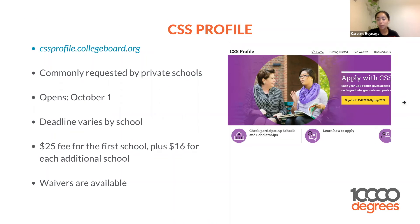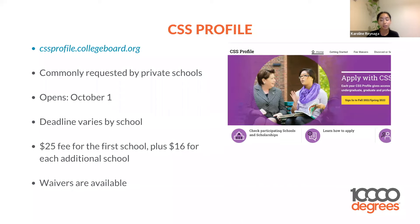For those applying to private schools, the CSS Profile gives you more access to different types of scholarships and aid. It is also requested by private schools. It opens in October and the deadline varies depending on the private school. Your first college listed costs about $25, and $16 for every additional school after that. You might also be eligible for waivers, so look into that as well.